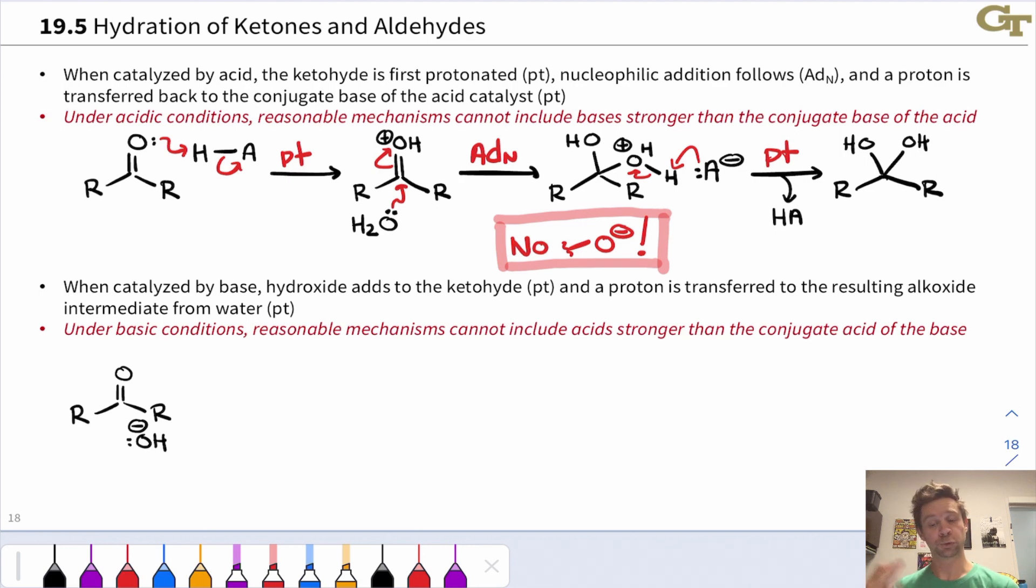This is the only base that we're allowed to draw, the only anionic species we're allowed to draw under acidic conditions. And this all follows from the principles of acid-base equilibrium. So in saying we're not allowed to do this, it's because it's not reasonable to do so chemically.